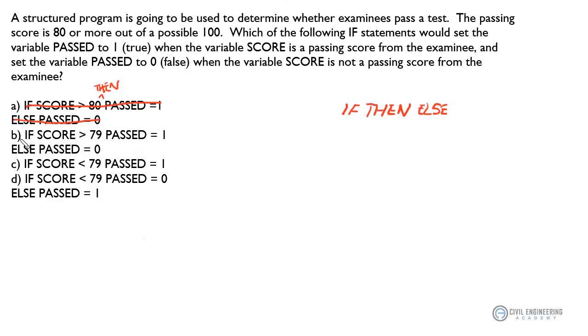Let's look at B. The logic there looks like we'll set PASSED to 1 or true for a score value of anywhere from 80 to 100, which is good, and we'll set the variable PASSED to 0 if we get a score that falls between the values of 0 and 79. So the logic of answer B checks out. Let's continue on and see what these other answers give us.